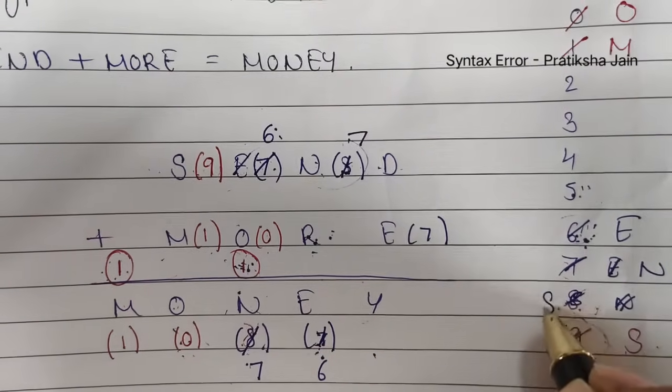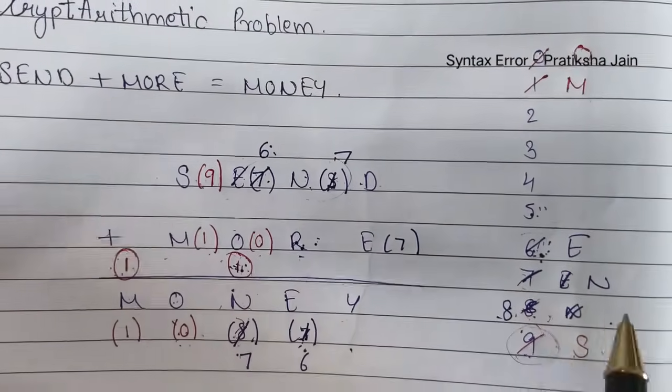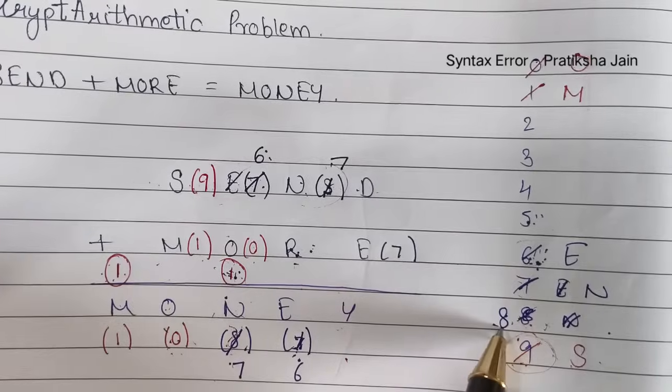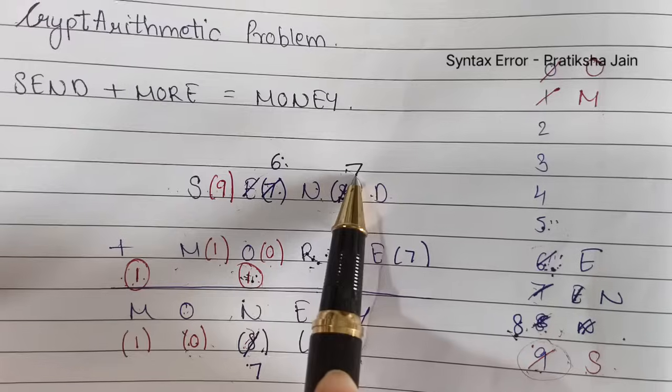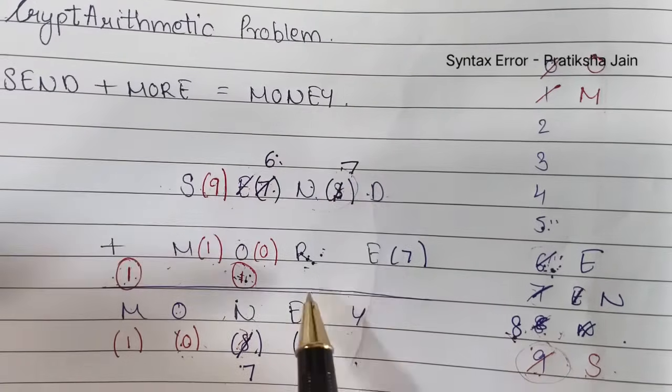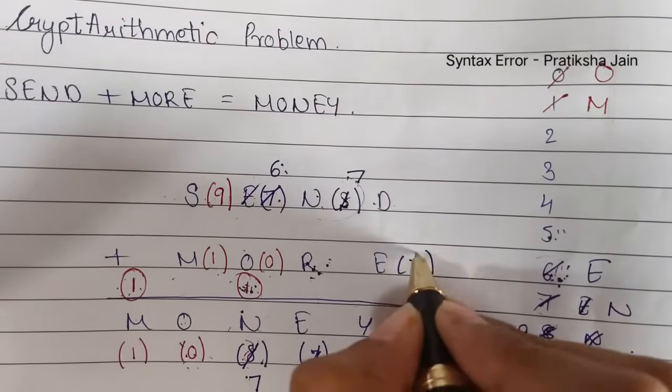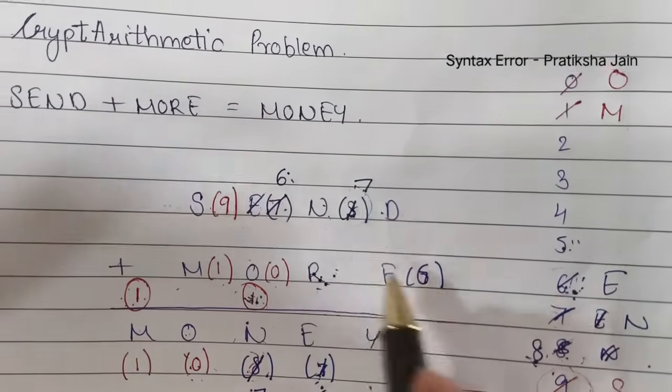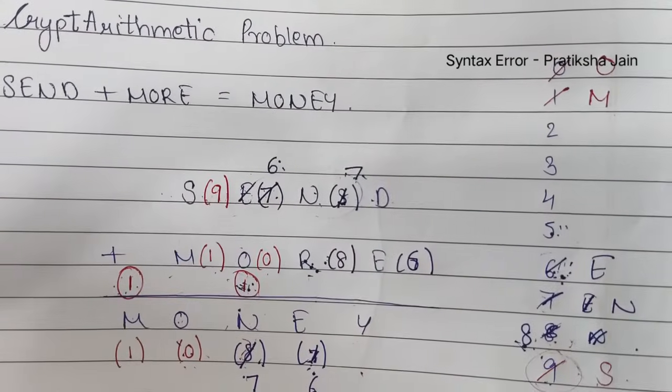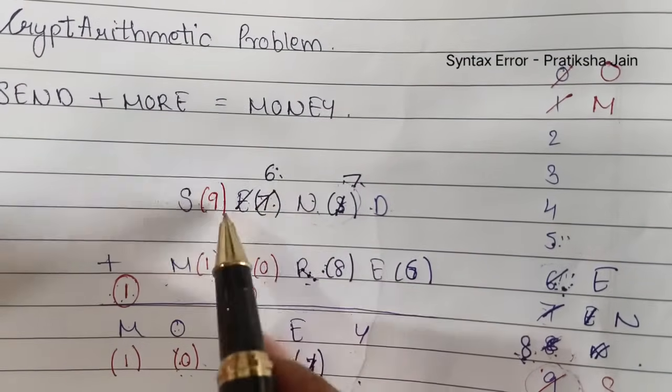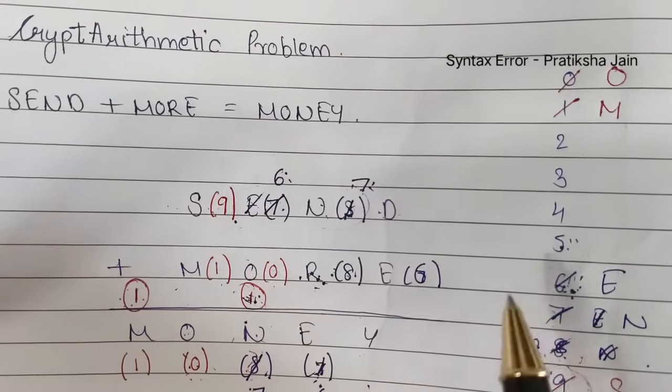So now 8 is a vacuum. 8 has not been assigned to any of the letters. Now what if we consider 8 for R. So 8 plus 7 will give us 15. 15 plus 1 will give us 16. Let us consider this 7 and let us keep R as 8. 6 is E, 7 is N, and 8 is R. 8 plus 7 gives us 15.